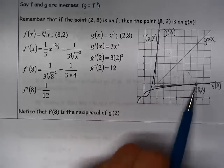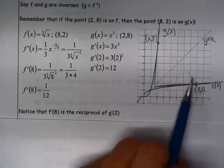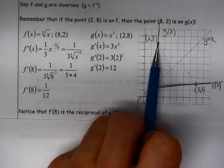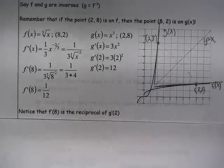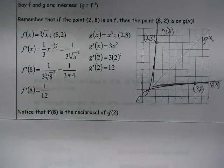Let's start that over. The slope at the point (8,2) of f of x is equal to the reciprocal of the slope of g of x at the point (2,8).